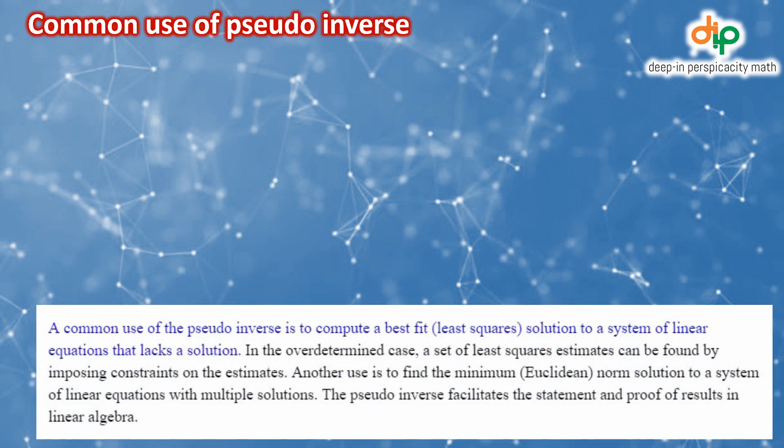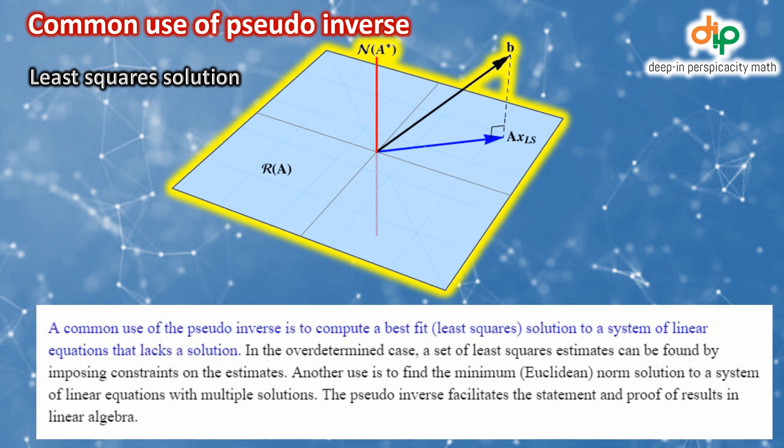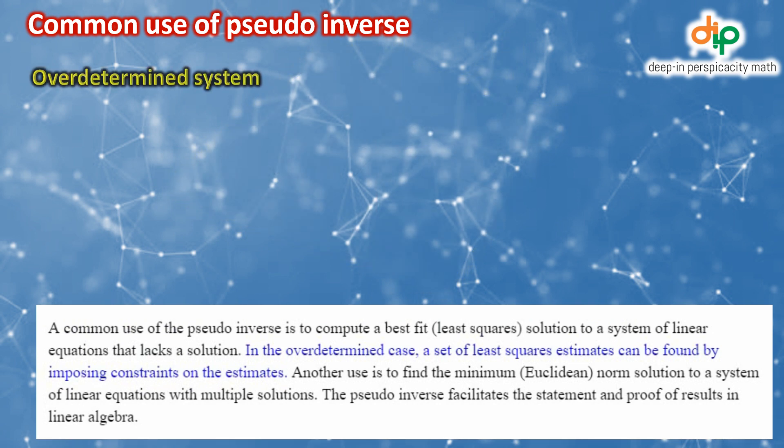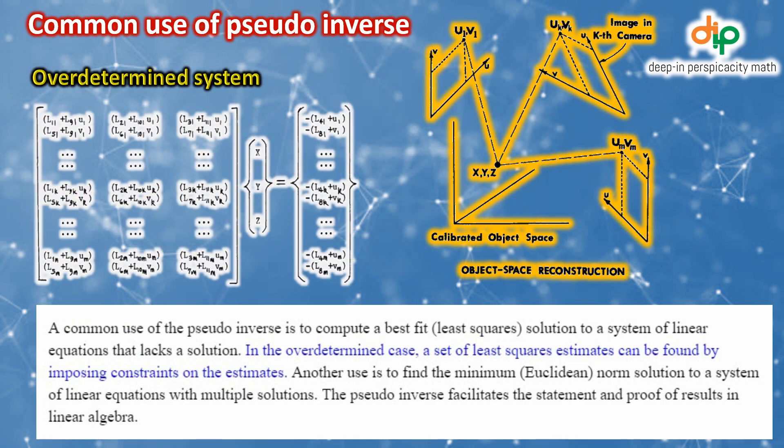A common use of the pseudoinverse is to compute the best fit least squares solution to a system of linear equations that lacks a solution. In the overdetermined case, a set of least squares estimates can be found by imposing constraints on the estimates.